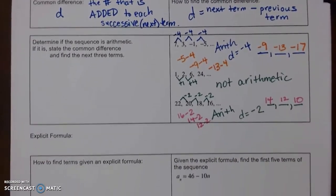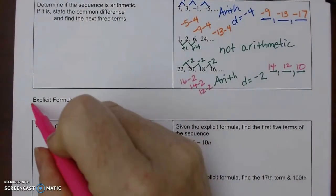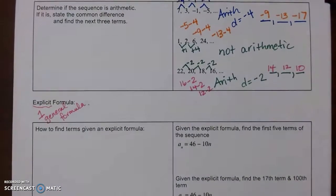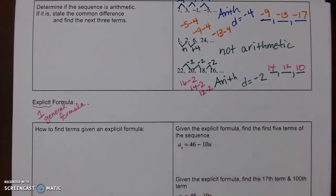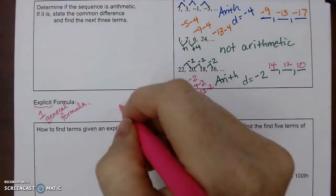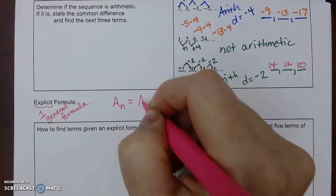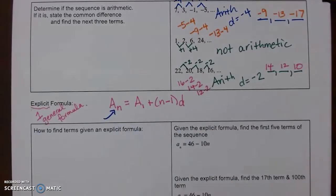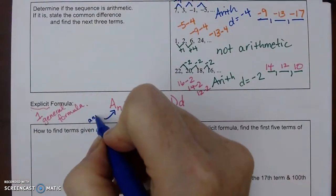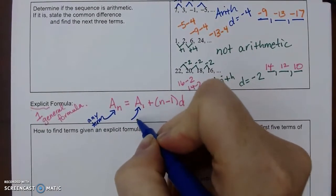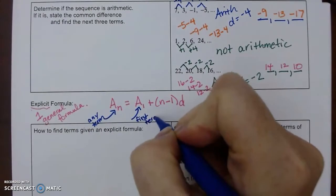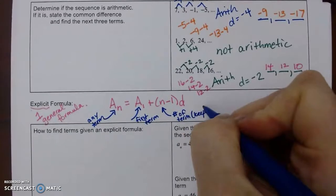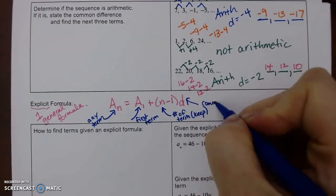An explicit formula is a single general formula that allows you to generate any term at any time. For an arithmetic sequence, the general formula is: a sub n equals a sub 1 plus (n minus 1) times d. Here, a sub n is any term, a sub 1 is the first term, n is the number of the term, and d is the common difference.